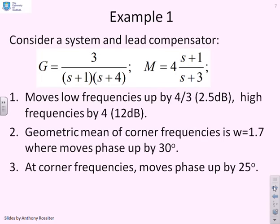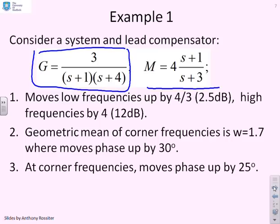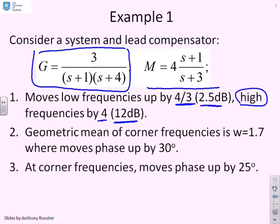Consider a system g = 3/((s+1)(s+4)) and a lead compensator m = 4(s+1)/(s+3). The assumption is that you're given the Bode diagram of g, and we want to see the impact of adding the lead. The lead at low frequencies has gain 4/3, or about 2.5 dB. At high frequencies the gain is 4, or 12 dB. So you're going to get an increase in gain from 2.5 dB to 12 dB.